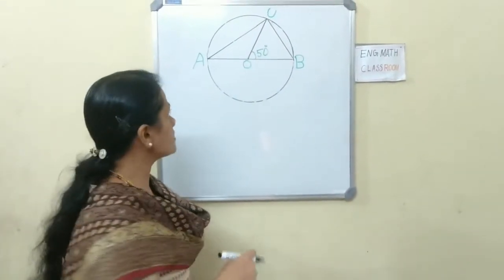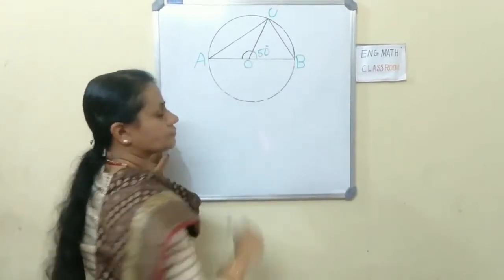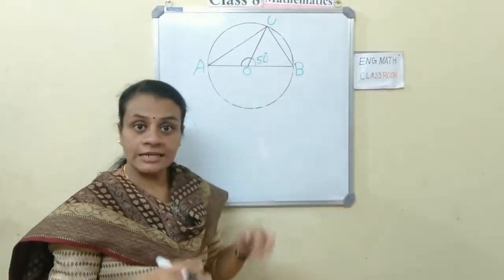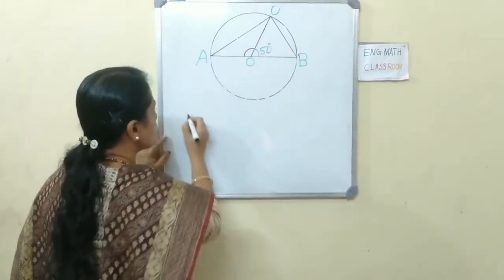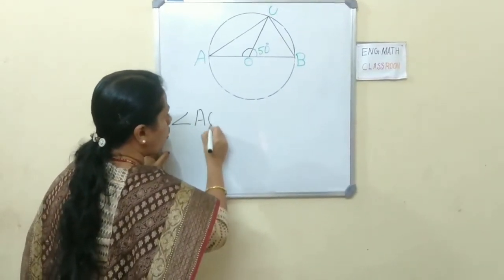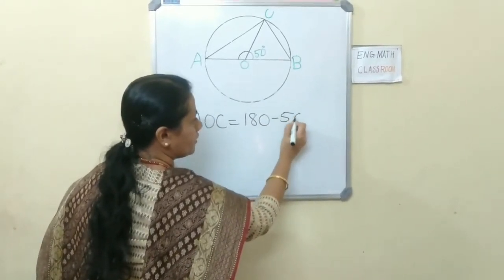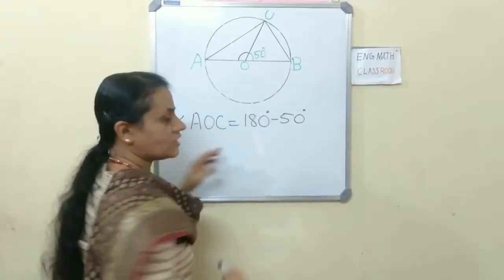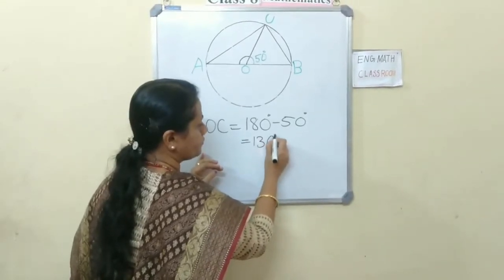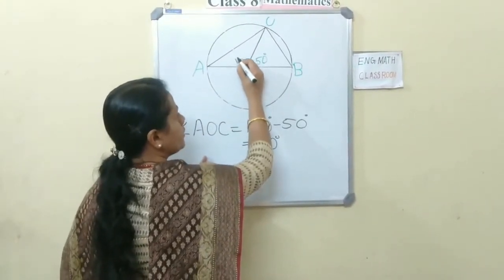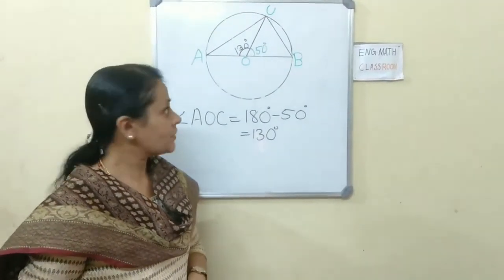What is angle AOC? These two angles are a linear pair, and a linear pair sums to 180 degrees. So angle AOC equals 180 minus 50 degrees, which is 130 degrees. Write here: angle AOC is 130 degrees.